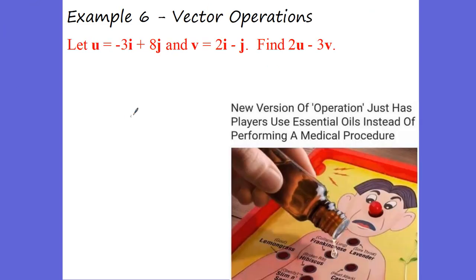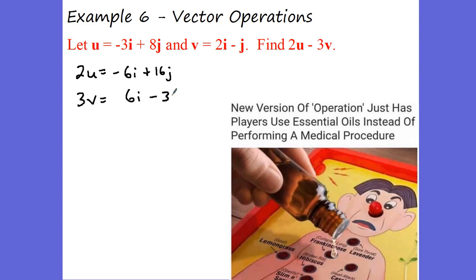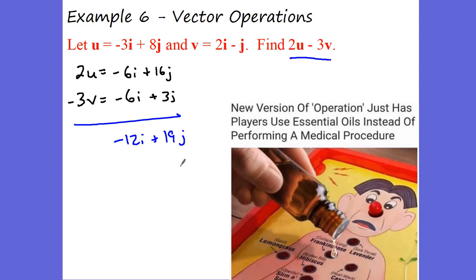Let's say U is -3i + 8j and V is 2i - j, and we want to find 2U - 3V. First, 2U = -6i + 16j. Then 3V = 6i - 3j, and negative 3V makes it -6i + 3j. Adding those together: -6i + 16j plus -6i + 3j gives us -12i + 19j. That's 2U minus 3V in linear combination. In component form it would just be ⟨-12, 19⟩.